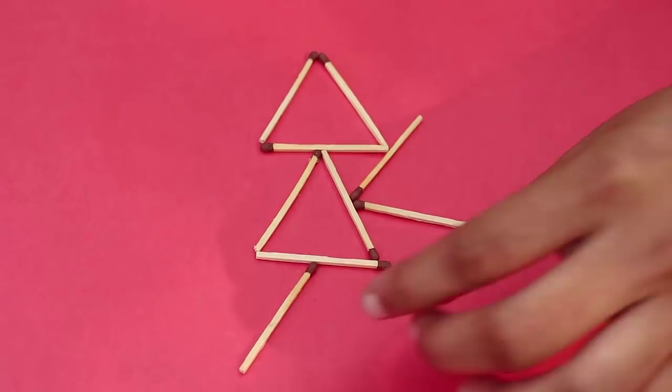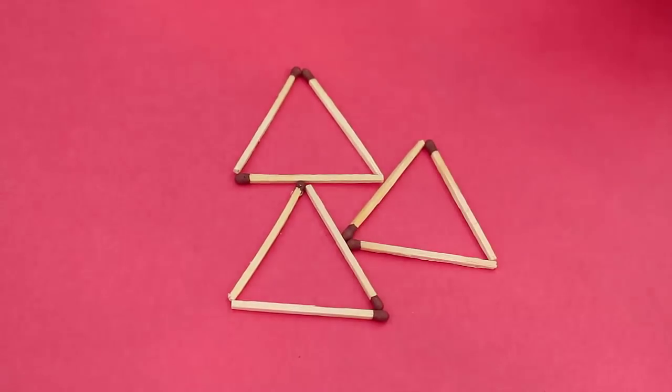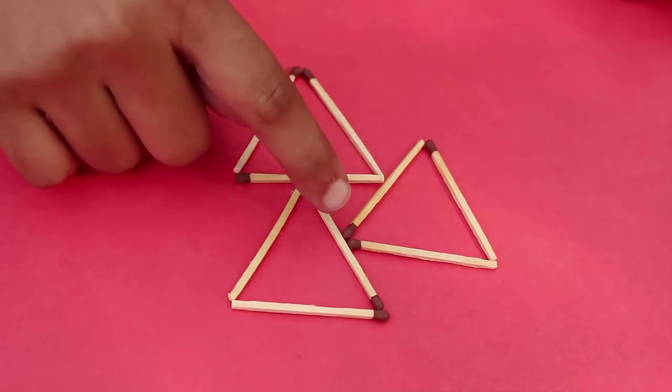It is quite easy. Just shift the three sticks of the lower triangle as shown and a smaller fourth equilateral triangle will emerge in the center.